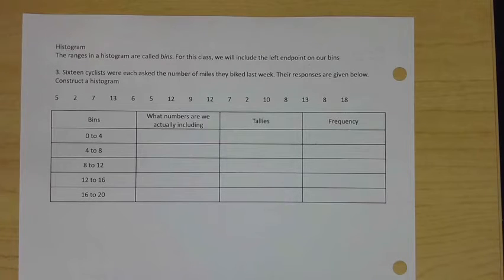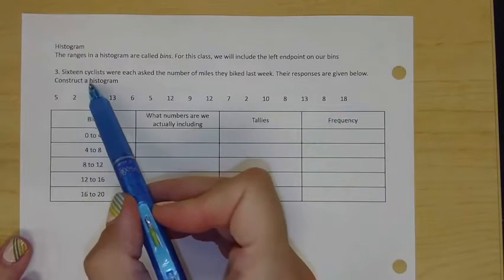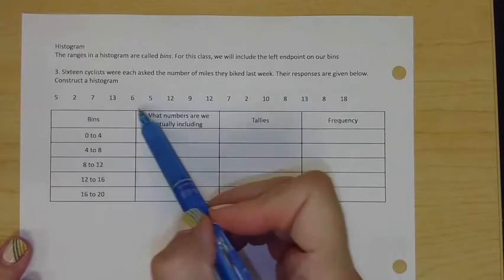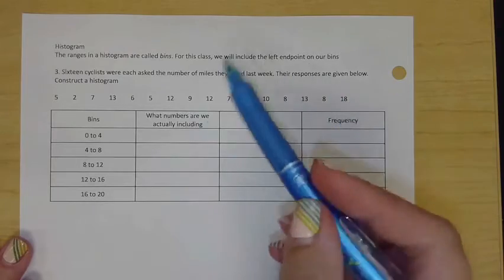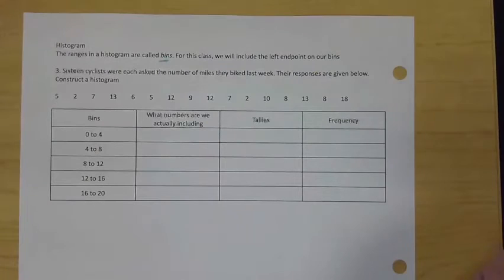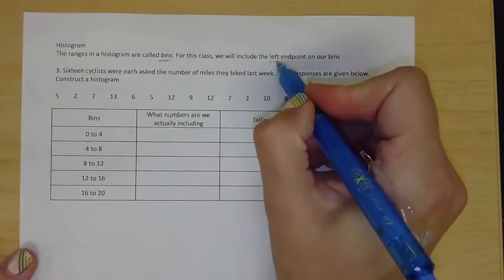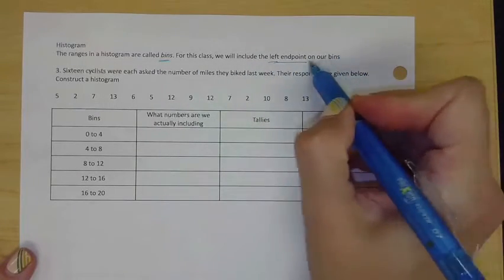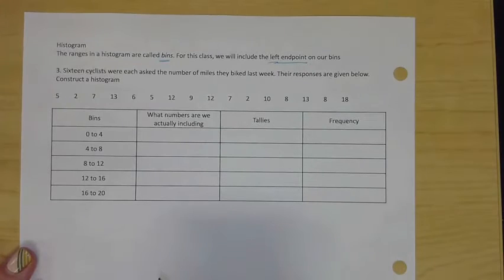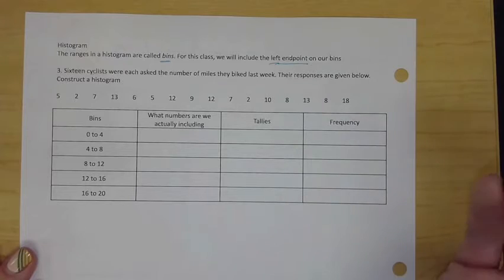This histogram is the bulk of our lesson today. We're talking about collecting this data which are 16 cyclists and this is their time that they biked last week. When we are putting our data into what we call bins, you can actually literally think of them as sorting out your data into the right location. For this class we're going to include the left end point in our bin.